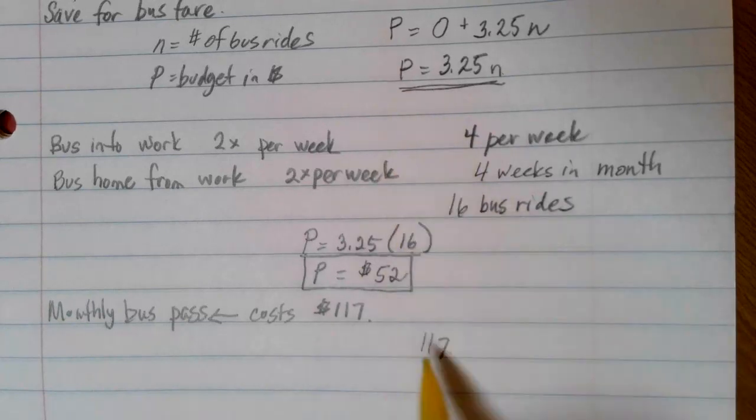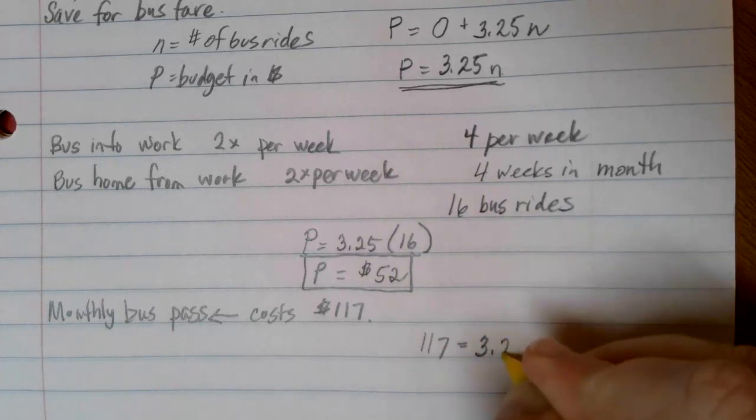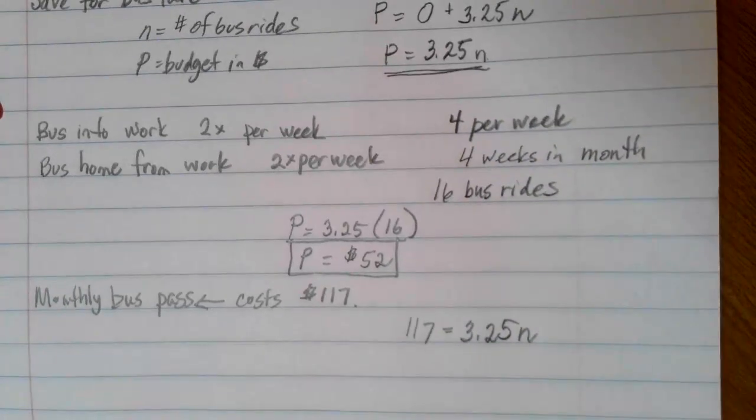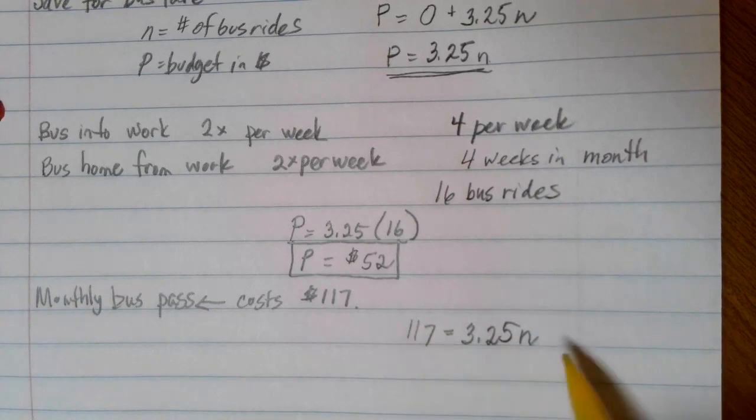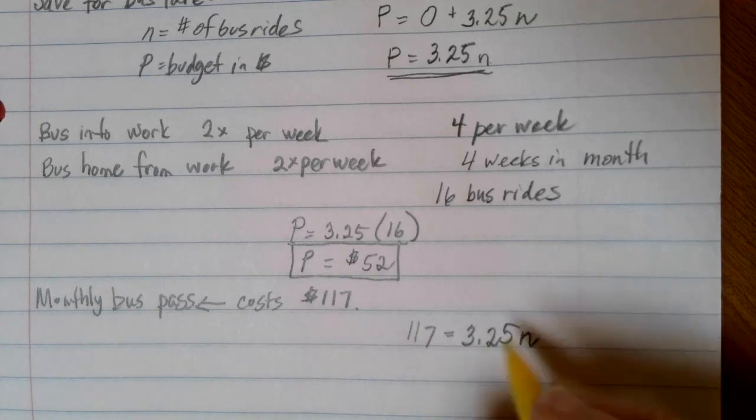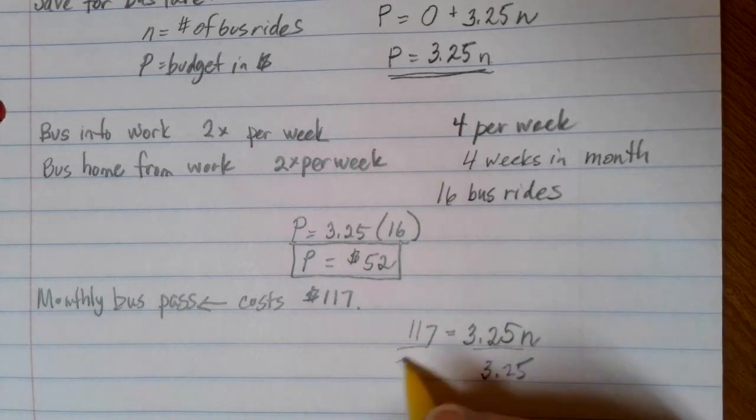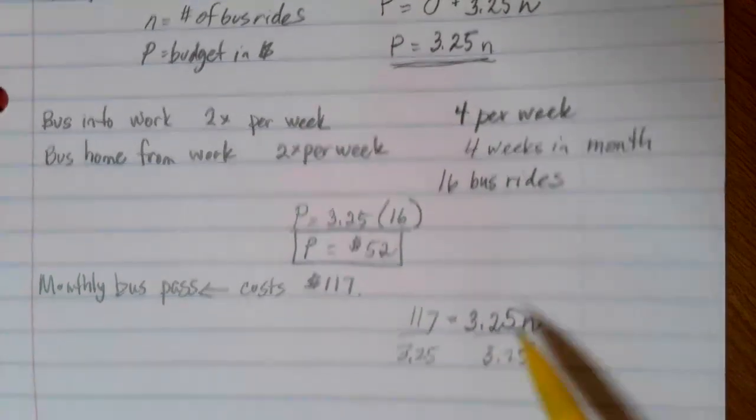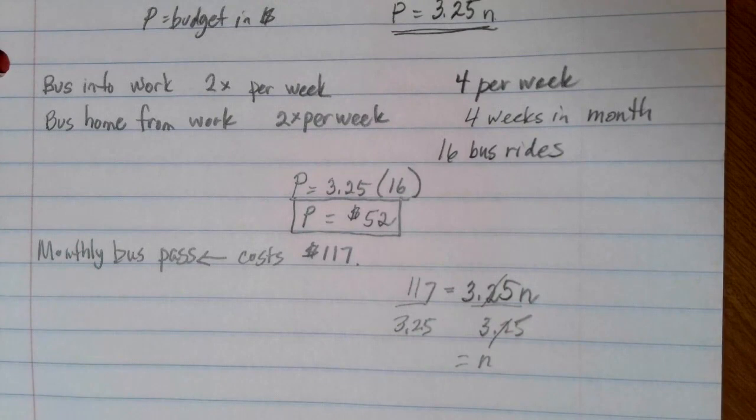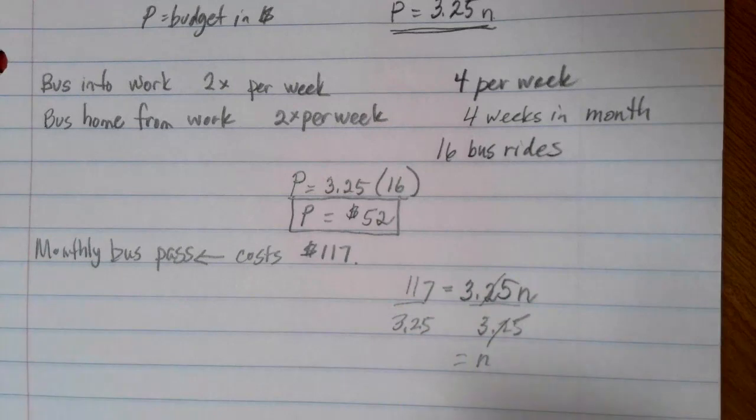So if we say our budget is $117, which would match the price of the monthly bus pass, it's going to be equal to 3.25 times N. But this time I'm trying to solve for N. I want to figure out how many bus rides can I take before it gets cheaper for me to switch over and buy the monthly bus pass. Right now, 3.25 is being multiplied times N, so I can divide by 3.25 on each side.